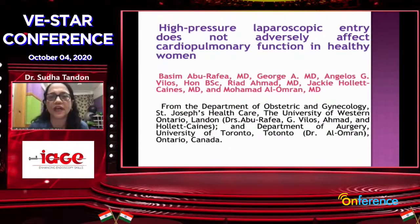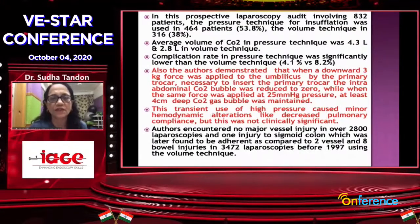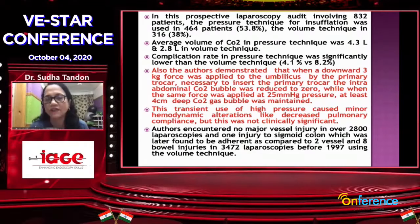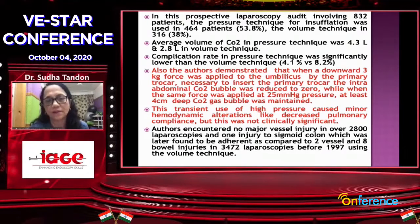High-pressure laparoscopic entry does not adversely affect the cardiopulmonary function in healthy women. This was nicely demonstrated: the trocar cannula was inserted at 25 mmHg, maintaining a four-centimeter carbon dioxide gas bubble as a safety measure. You must not look at the volume alone — if you put your trocar cannula and the whole abdomen becomes very tense, you can very easily insert at this high pressure. This transient high pressure causes only very minor hemodynamic alterations, like decreased pulmonary compliance, which is not really clinically significant.